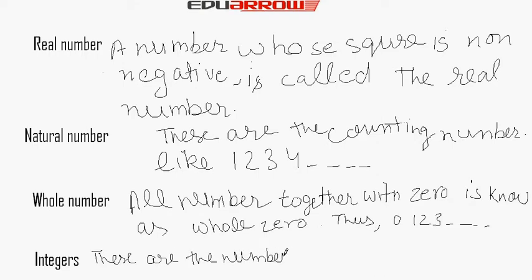Integers range from minus infinity to plus infinity. In between them, 0, +1, +2, +3 are the positive integers. And -1, -2, -3 to negative infinity are negative integers. Every natural number is an integer.